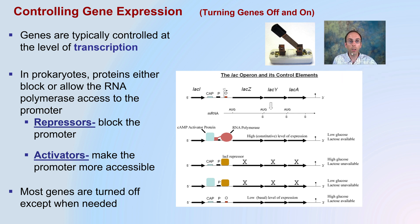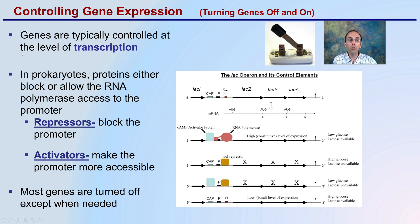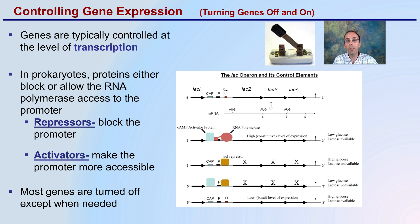Lastly, controlling the gene — whether it gets turned on or turned off. Genes are typically controlled at the level of transcription so the cell doesn't waste energy. In prokaryotes, proteins either block or allow RNA polymerase to access the promoter, or they're repressed. Repressors block the promoter region — like putting a cover over the on/off switch so you can't turn the light on. Activators make the promoter more accessible — like a nightlight over the switch to make it easier to find in the dark.